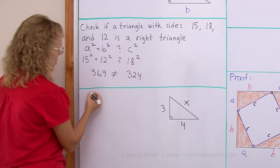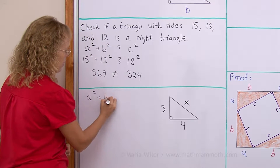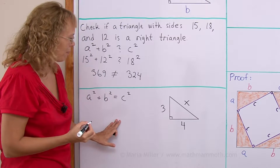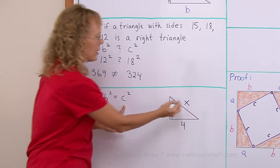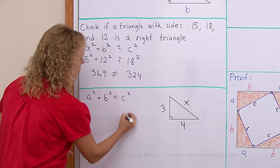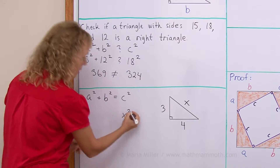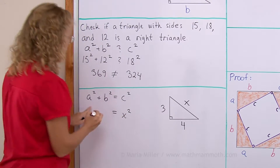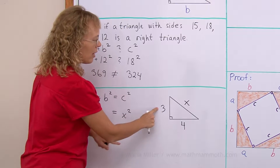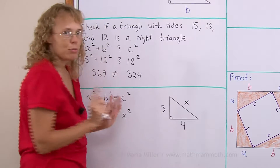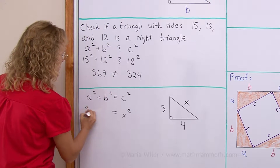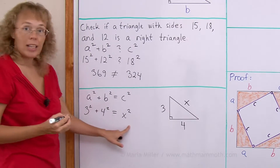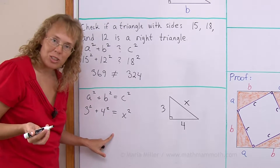Let me first write the Pythagorean theorem. C is the longest side, x, so I write x squared — you must not forget the exponent. For a and b, I can choose either side; it won't matter. So I write 3 squared plus 4 squared equals x squared. Now I have an equation to solve.